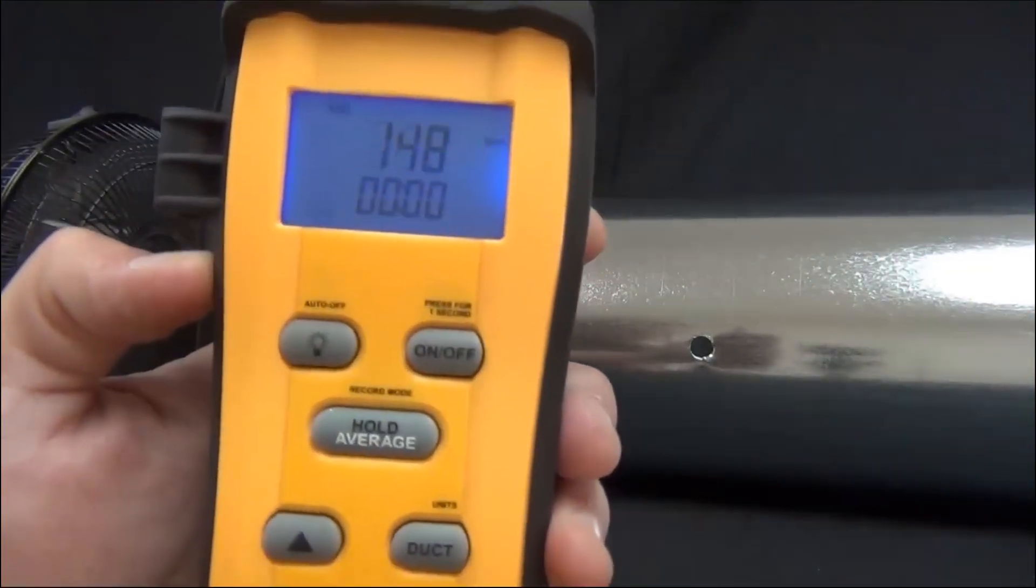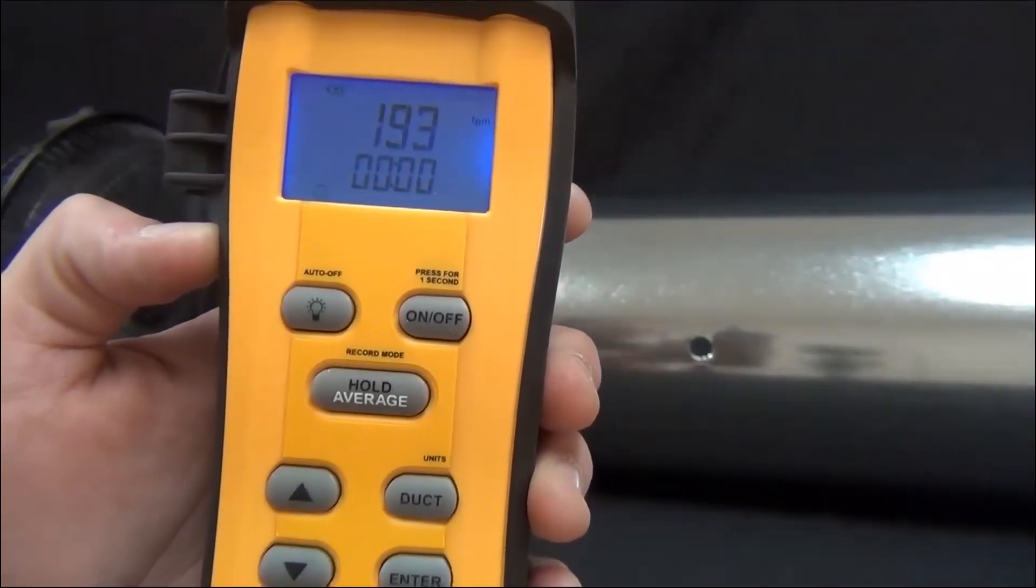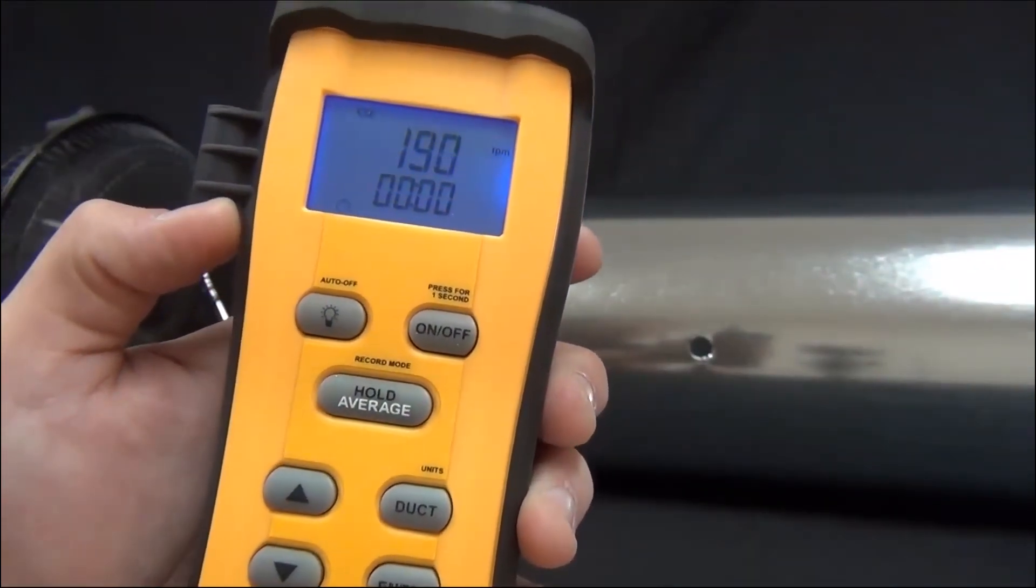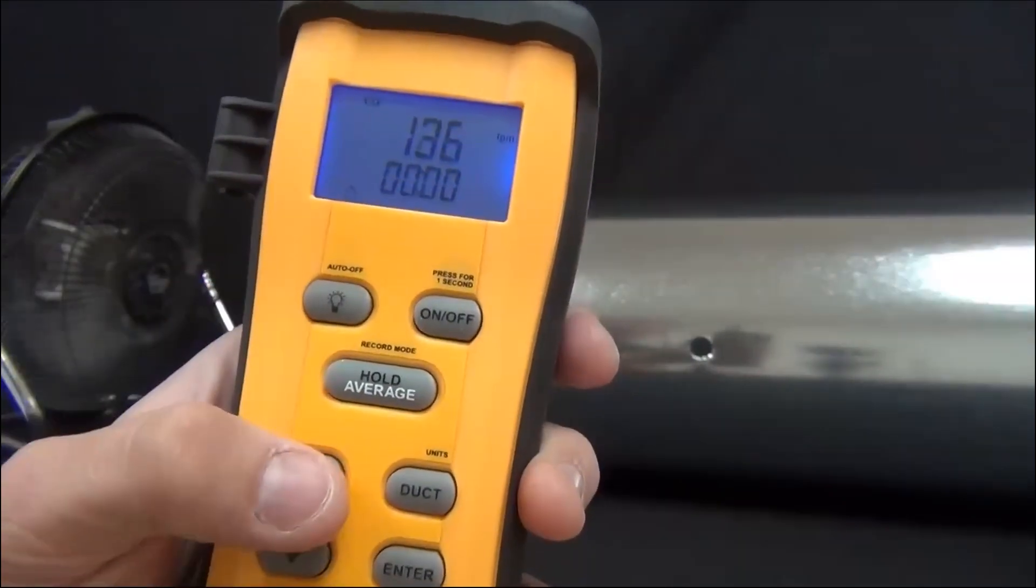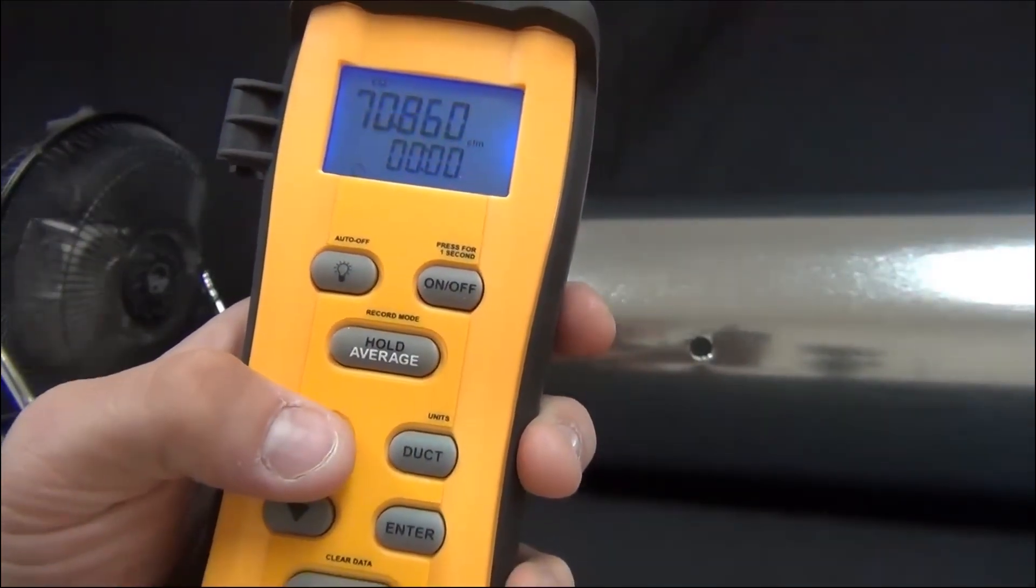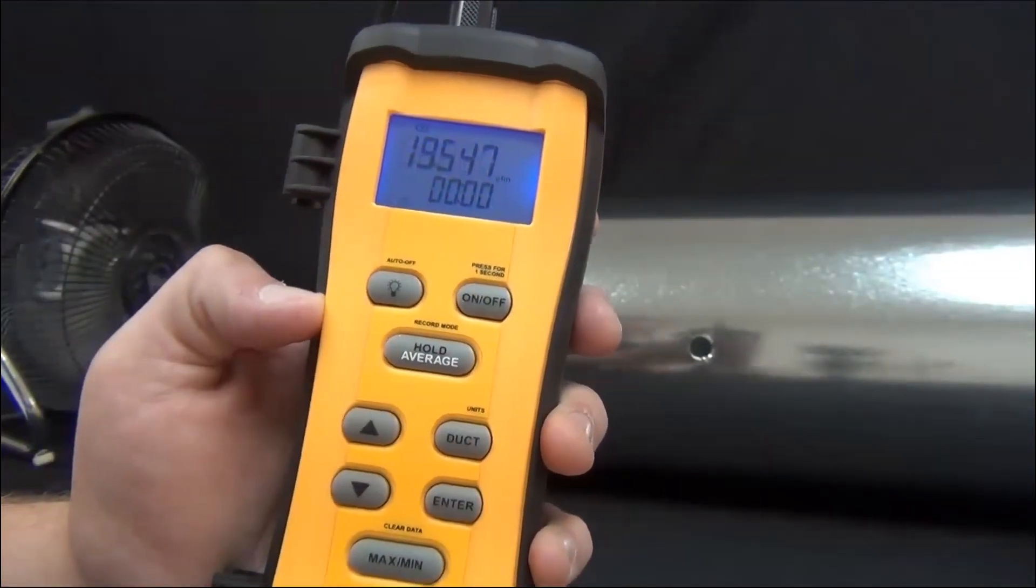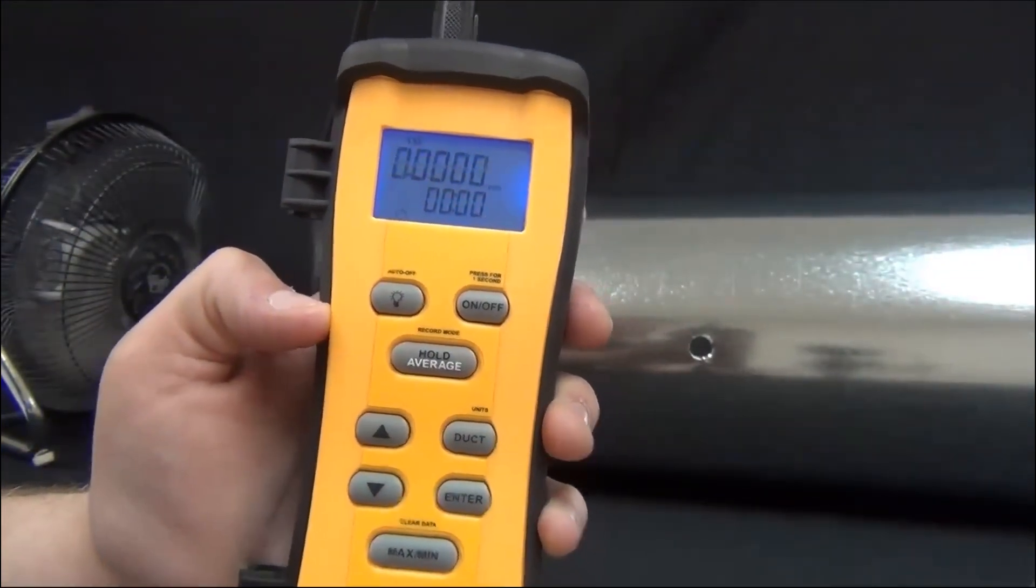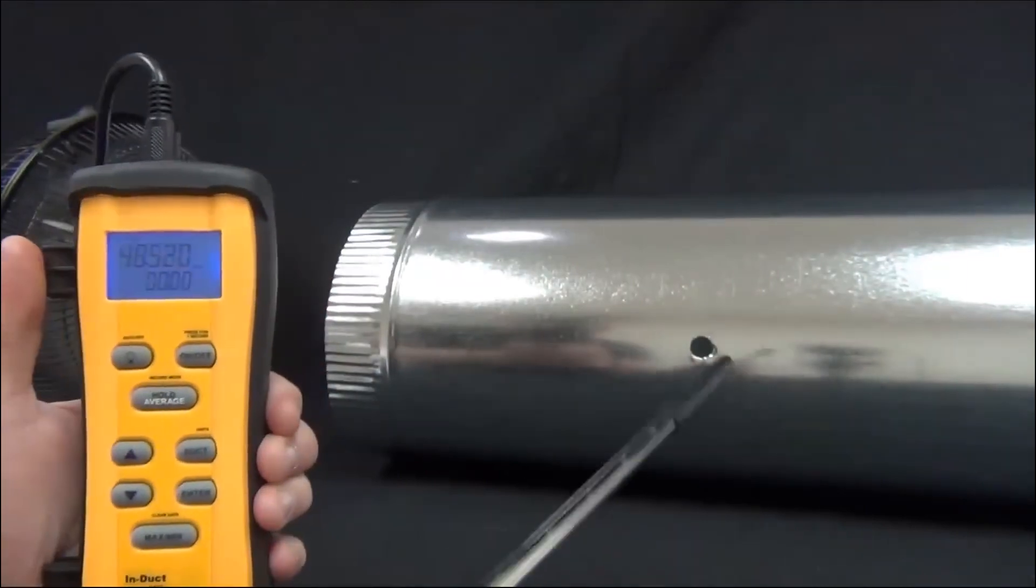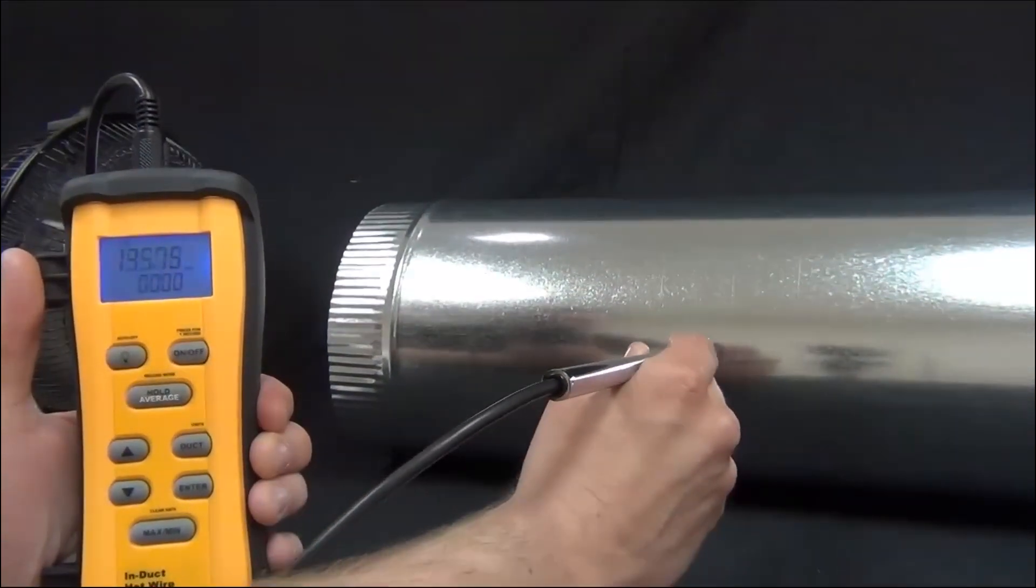And then what you're going to see is the feet per minute as well as the timer to let you know how long you've been taking measurements. You can use the up arrow to switch to temperature or to CFM and watch it as it goes along. So what I'm going to do is leave it on CFM and then stick the wand in the duct. Make sure that the flat side is pointing into the airflow.